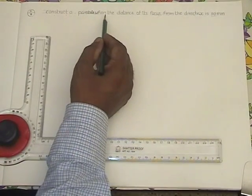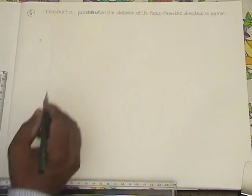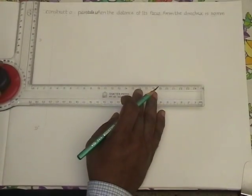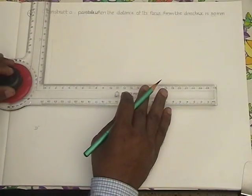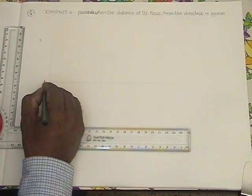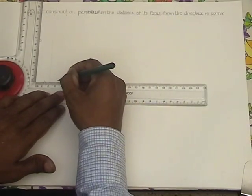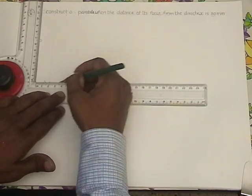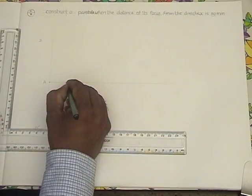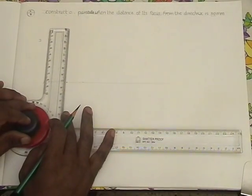Construct a parabola where the distance of its focus from the directrix is 50mm. First draw a vertical line — consider that as the directrix, mark it as D-D'. Draw a horizontal line as the axis of the parabola. Take 50mm from the end and mark this as A. Divide this 50mm into two equal parts of 25mm each. At 25mm, mark the vertex, because in a parabola the eccentricity is 1.